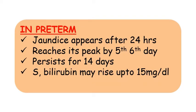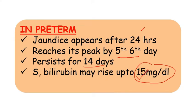Talking about preterm babies — they are more immature than term babies. In preterm babies, jaundice appears after 24 hours but reaches its peak by the 5th to 6th day. It takes a long time to reach peak value and equally long to resolve, persisting for almost 14 days before resolving on its own. Serum bilirubin can rise up to 15 mg per dl in preterm babies, whereas in term babies it can rise up to 12 mg per dl.